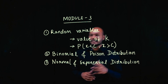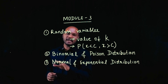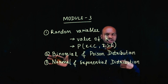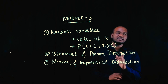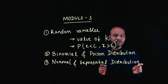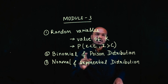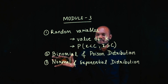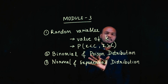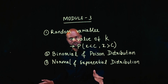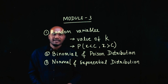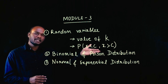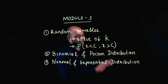The second topic in module 3 is binomial and Poisson distribution. To do questions on these topics, the only requirement is that you should know whether the question is binomial or Poisson distribution, and you should know the formula for each. If you know these two formulas and can identify the distribution type, you can do all questions on these two topics.